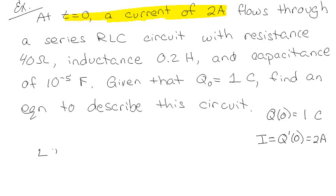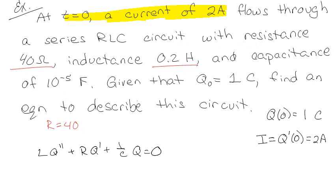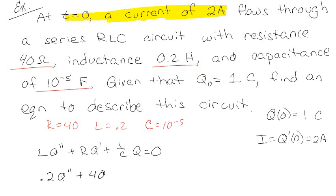Our equation is L·Q'' + R·Q' + (1/C)·Q = 0. We have R = 40, L = 0.2, and C = 10⁻⁵. Plugging those in: 0.2·Q'' + 40·Q' + 10⁵·Q = 0. Dividing through gives Q'' + 200·Q' + 500000·Q = 0.